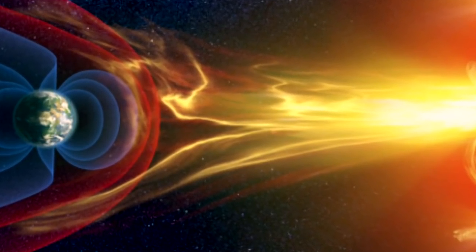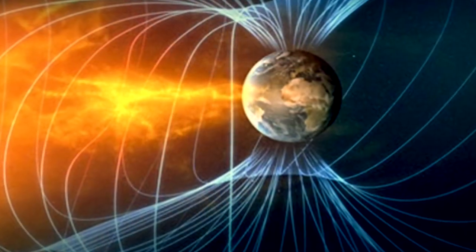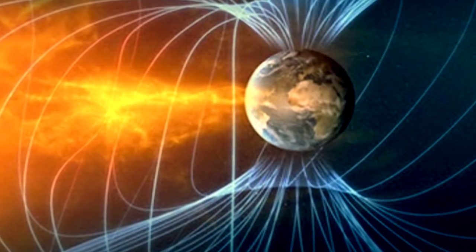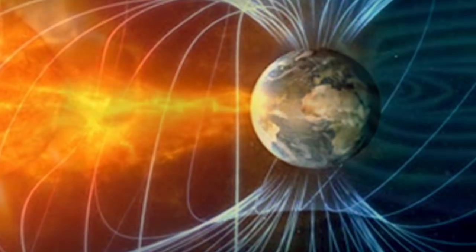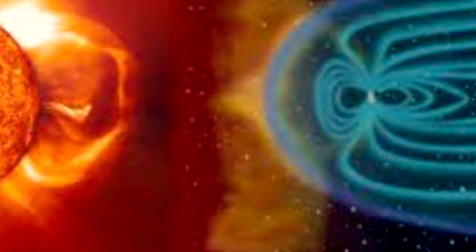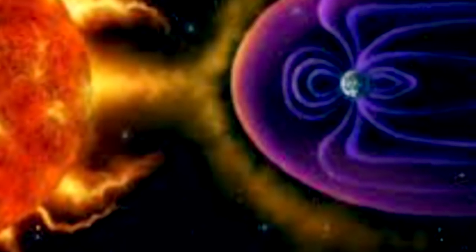Website Space Weather said, as Earth exits one stream of solar wind, another stream is on the way. Estimated time of arrival: November 18. The gaseous material is flowing from a relatively small hole in the Sun's atmosphere. Polar geomagnetic activity and Arctic auroras are possible this weekend.